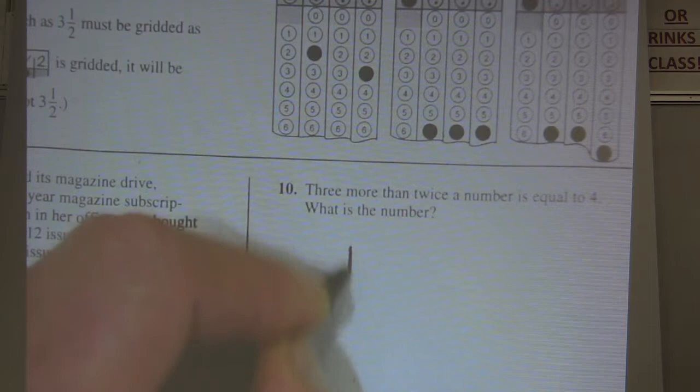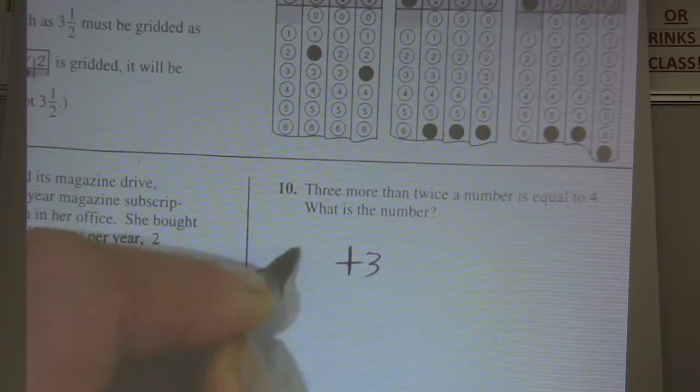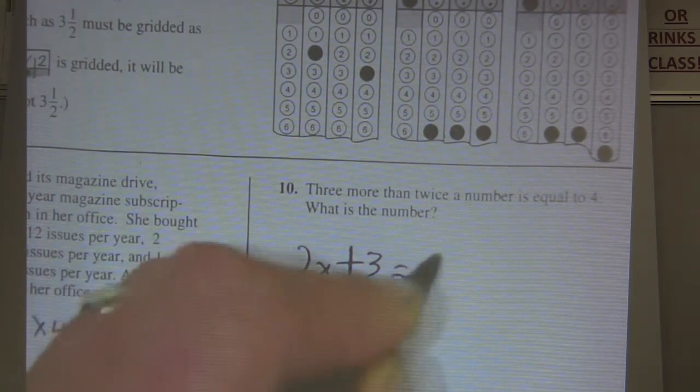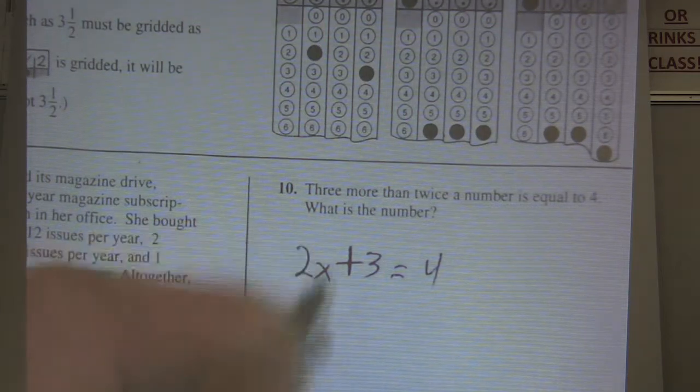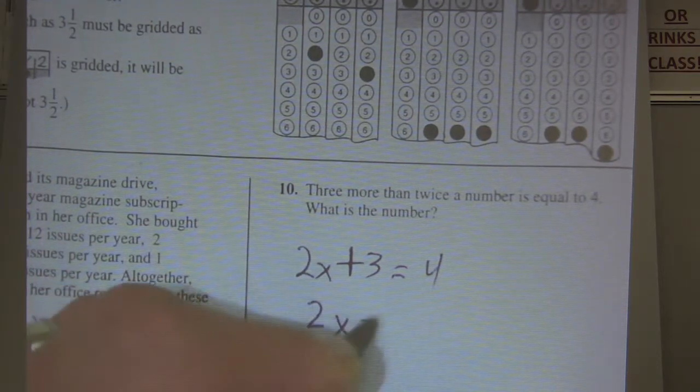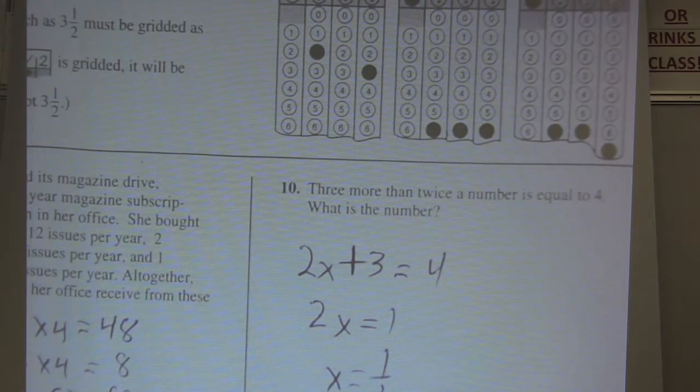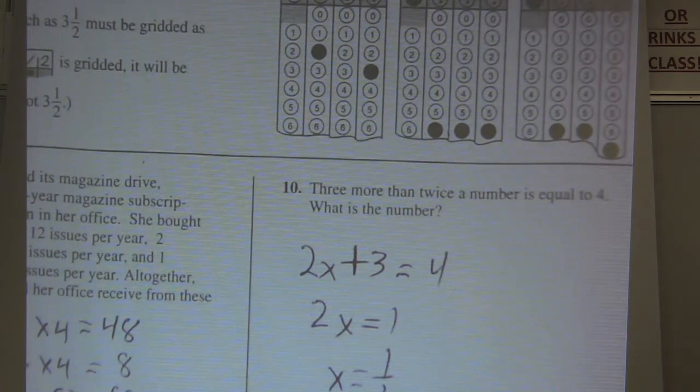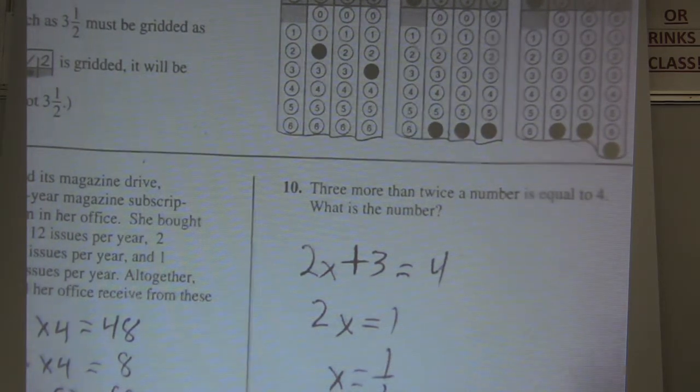Three more than means something plus three. So, twice a number is four. And this is just easy solve. You go ahead and solve, you end up getting 2x equals 1, so x equals 1/2. So, you can bubble in 1/2. You can even bubble in 0.5. Both will work on that.